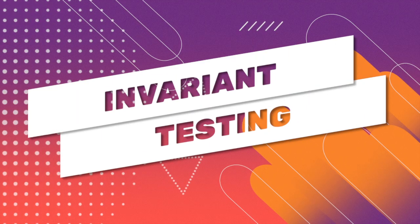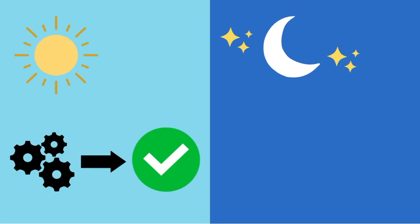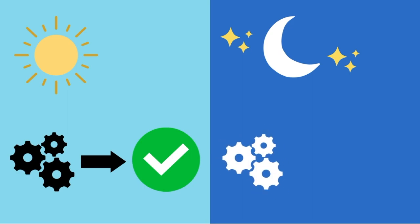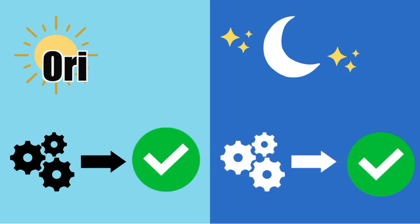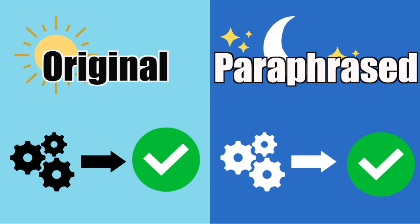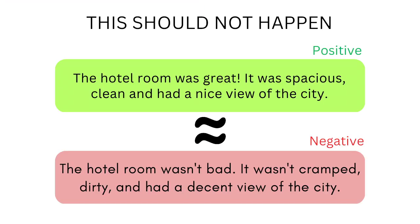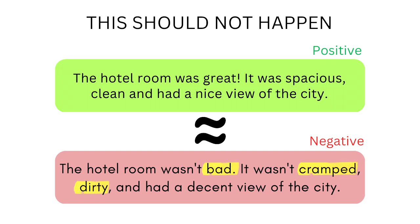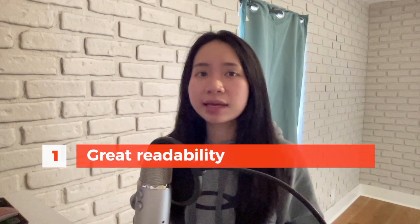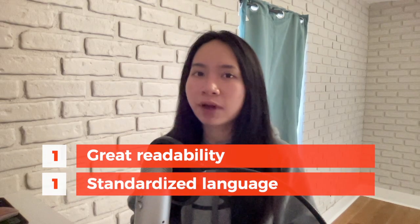The first test is invariant testing. Invariant testing checks whether an ML model produces consistent results under different conditions. An example involves verifying if a model is invariant to paraphrasing. If a model is paraphrase-variant, it might classify a positive review as negative when the review is rephrased using negative words. To implement this test, we will use a Python framework for behavior-driven development called Behave. While PyTest is an option, Behave is better suited for defining and validating the behavior of machine learning models as it offers great readability and a standardized language for expressing requirements.